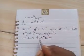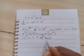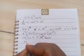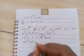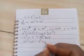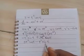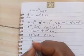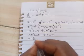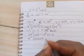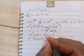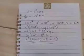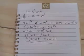Opening the brackets gives negative t cubed sin t plus 3t squared cos t. Rearranging with the positive term first: 3t squared cos t minus t cubed sin t. We can factorize since t squared is common to both terms: t squared times (3 cos t minus t sin t). That is the final answer.